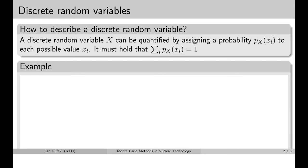Let's have a look at an example of a discrete random variable. For instance the reaction type. X is the reaction type.